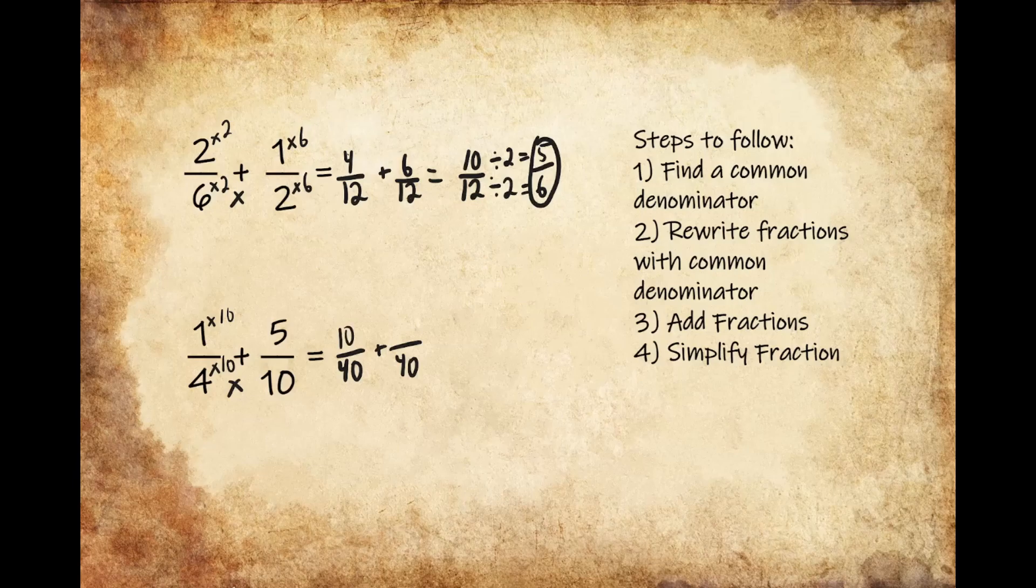Now I had to multiply 10 times 4 in order to get 40, so I have to do the same thing to the numerator up top and multiply 5 times 4, which gives me 20.